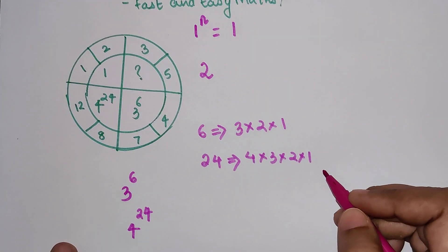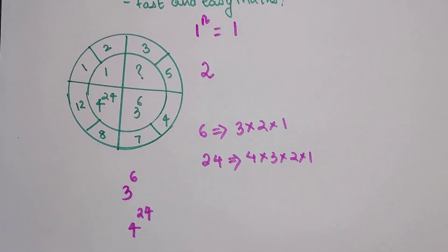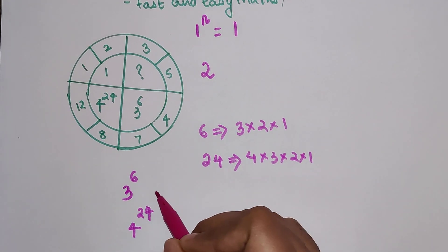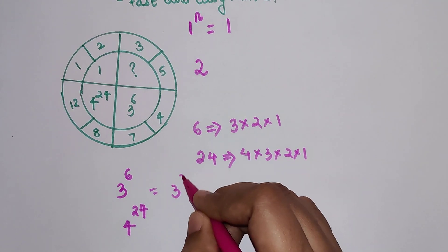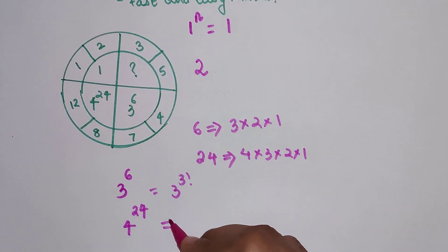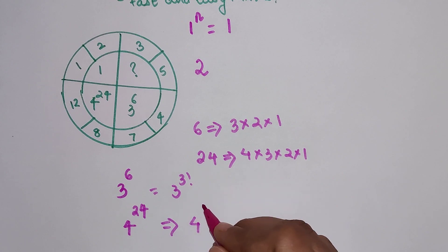This is for those who do not know factorials by heart. But if you are preparing for any entrances, I would request all of you to remember these factorials by heart. It is easier that way. At least till 10 you should know. So now here I can very nicely say that this is nothing but 3 raised to 3 factorial and this can be written as 4 raised to 4 factorial.